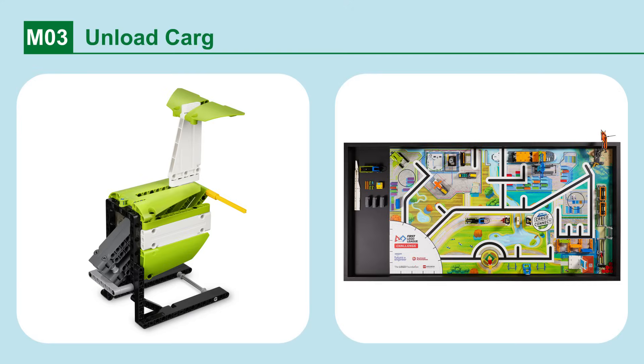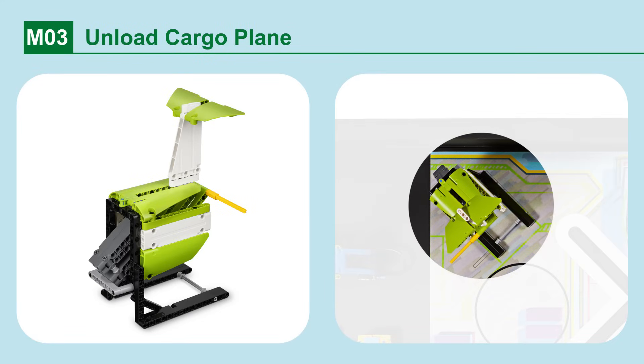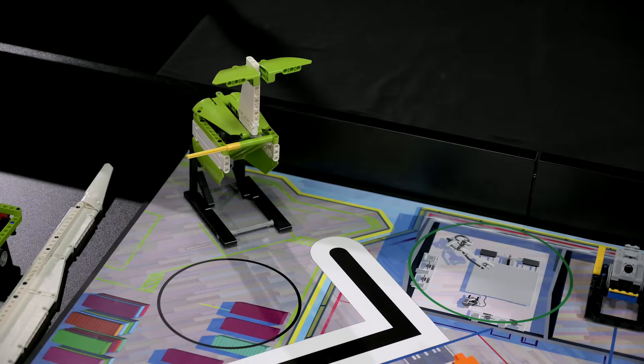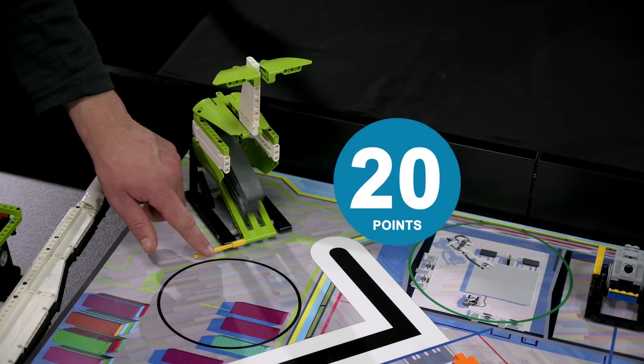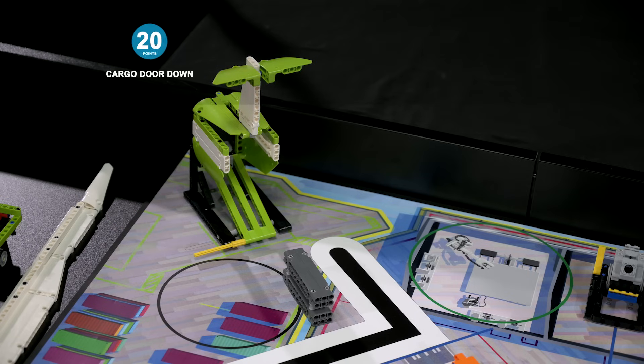Mission 3. Unload cargo plane. Unload the cargo plane and send the container on its journey. If the cargo door is lowered and rests completely down, touching its black frame. And the container is completely separate from the plane.